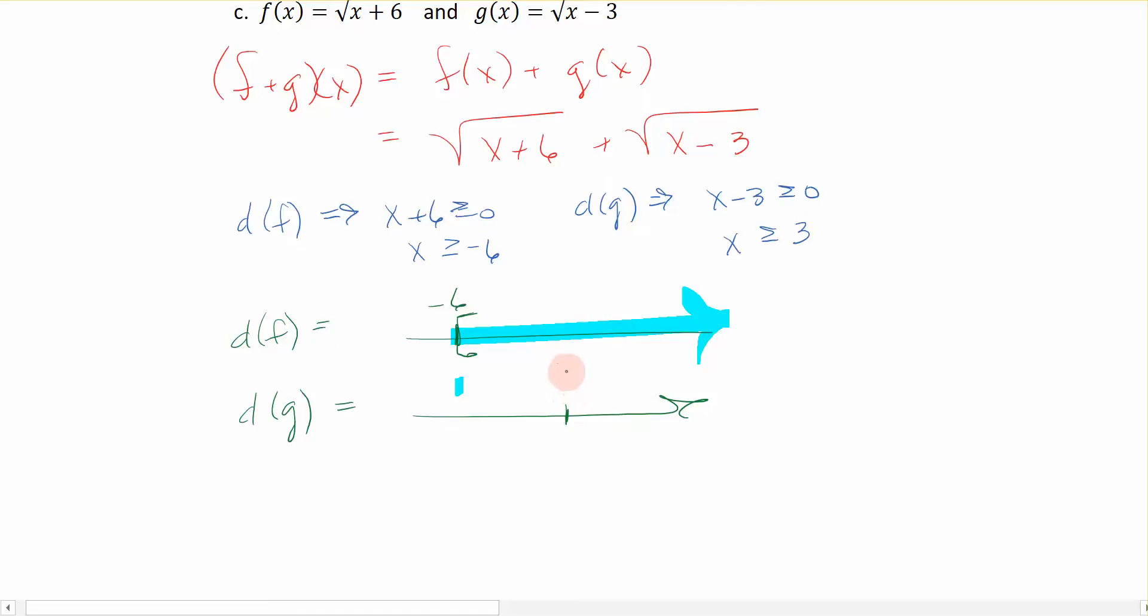g is x is greater than or equal to 3. Well, 3 is about here, we'll call it here. It's about here on our number line. I know it's on the right side of negative 6, don't I? And we would shade to the right of that. So the domain of f plus g is where these two number lines intersect, and that is going to be anything to the right of 3.